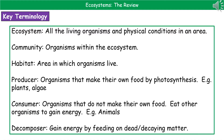If we talk about a consumer, these are the organisms that can't make their own food. In order to get energy they've got to eat other organisms, so that's any animal you can think of really. And then the last one is decomposer — decomposers are the ones that gain energy by feeding on dead or decaying matter.